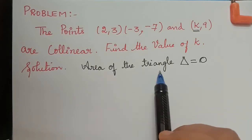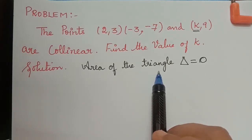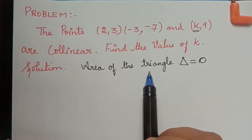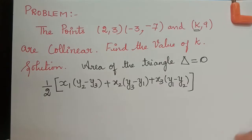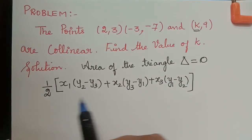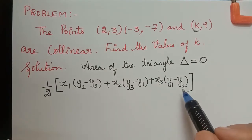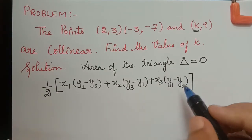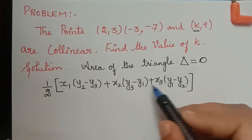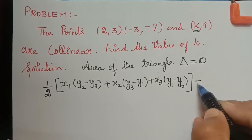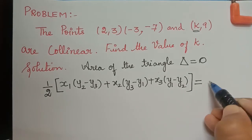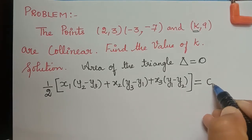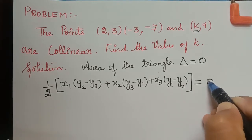The area of the triangle is given by a formula. We have the area of the triangle equal to zero, so we can equate this formula to zero.